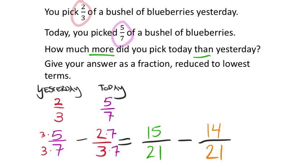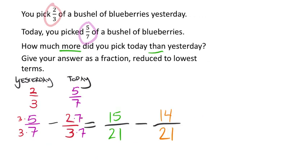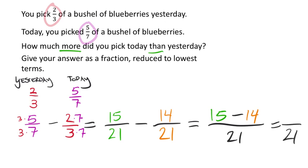Now we take 15 minus 14 in the numerators, keeping the denominator as 21. Fifteen minus fourteen gives us a new numerator of 1. So we end up with one twenty-first. That's our answer for how much more was picked today than yesterday.